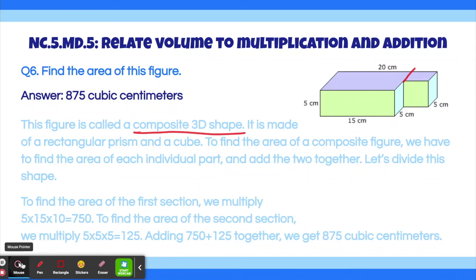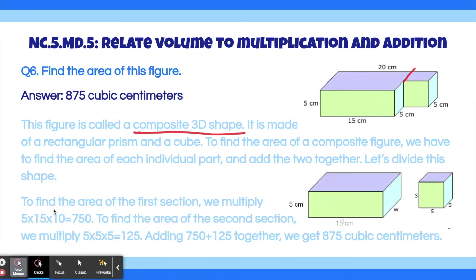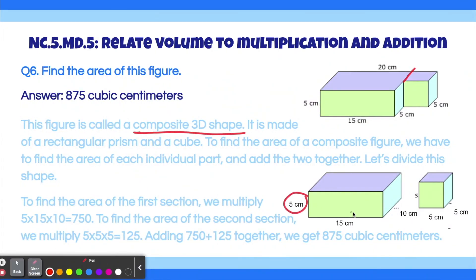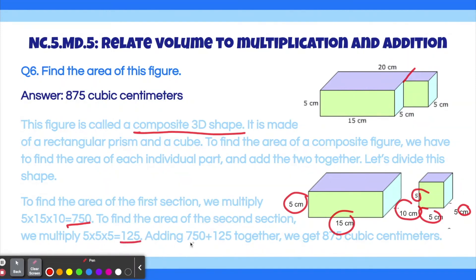To find the area of the first section, we multiply 5 times 15 times 10 for the rectangular prism. So 5 times 15 times 10 is 750. Now to find the area of the second section, we multiply 5 times 5 times 5 because it is a cube, so all the dimensions are the same. 5 times 5 times 5 is 125. Then we add the two numbers together: 750 plus 125 equals 875. So the answer is 875 cubic centimeters.